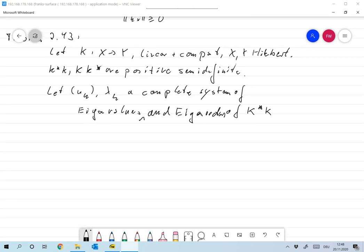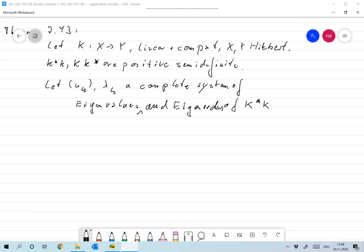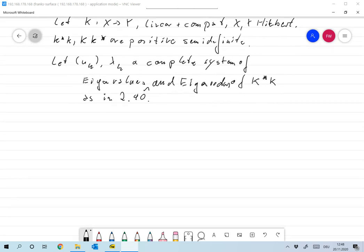Then the lambda_k are not negative, so they're actually positive because these are the positive and the non-zero eigenvalues. They're taken to be as in, I should write this down, as in 2.40. And since they can't be negative because the K* K is positive semi-definite...